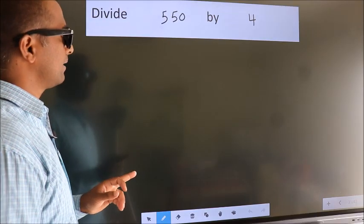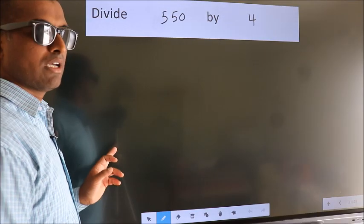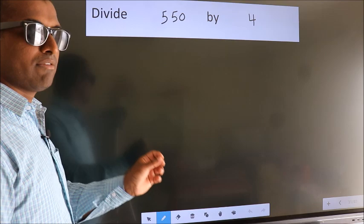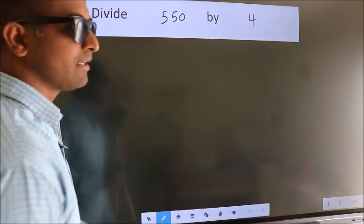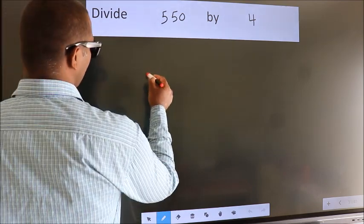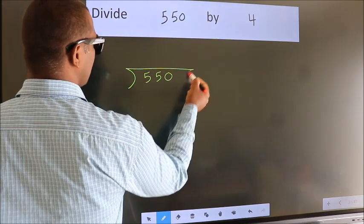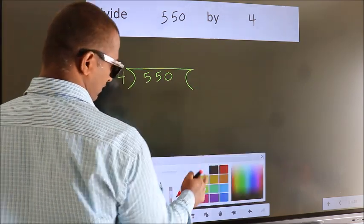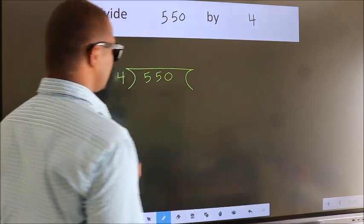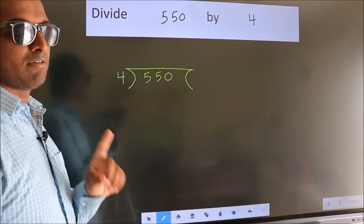Divide 550 by 4. To do this division, we should frame it in this way: 550 here, 4 here. This is your step 1.